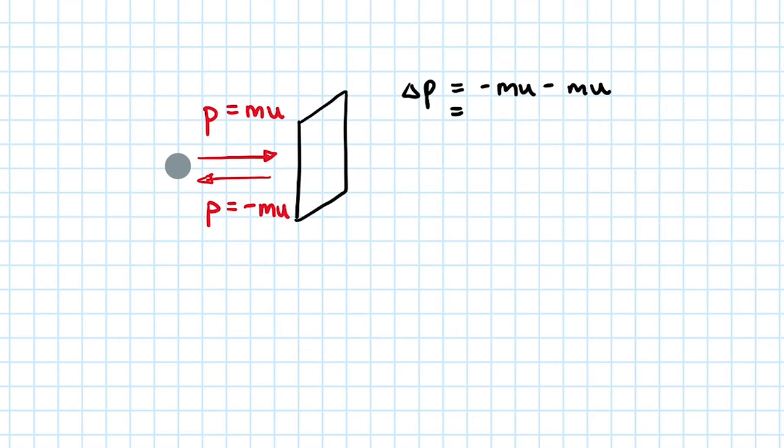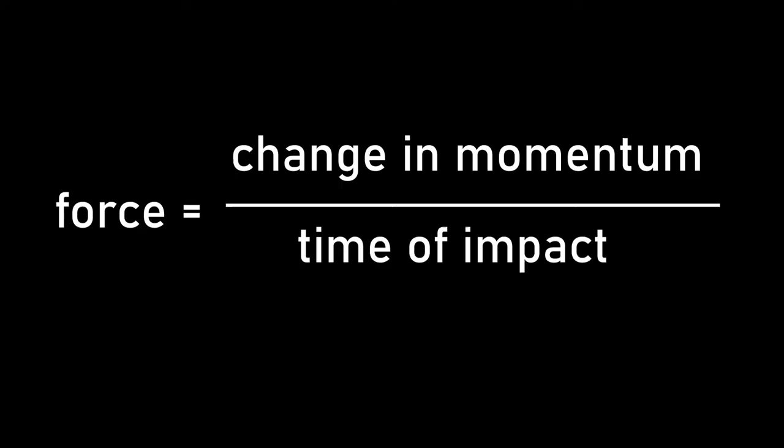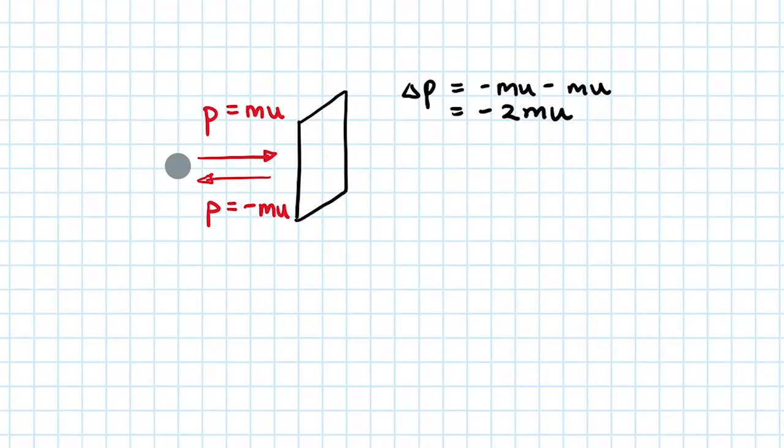Do you remember the impulse equation relating the change in momentum and force? Force is equal to the change in momentum divided by the time of impact. Substituting this into the impulse equation, the force that the particle exerts on the wall is minus 2 mu over their contact time.